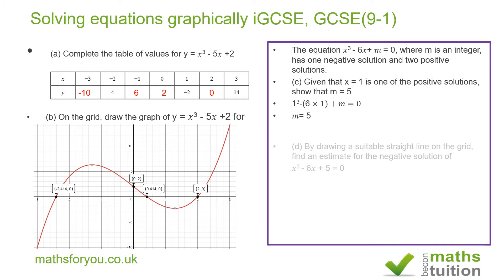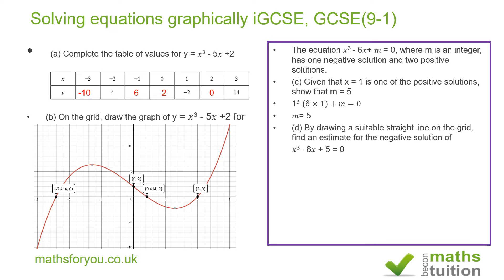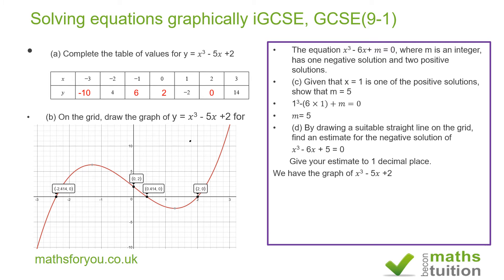Moving on to part d. It says: by drawing a suitable straight line on the grid, find an estimate for the negative value of x³ - 6x + 5 = 0 — since we know there are two positive values and one negative value. Give your estimate to one decimal place. We already have the graph of y = x³ - 5x + 2, and we want to solve x³ - 6x + 5 = 0.